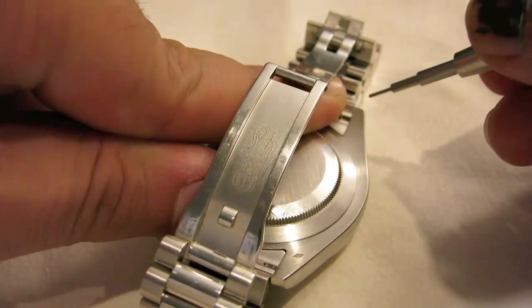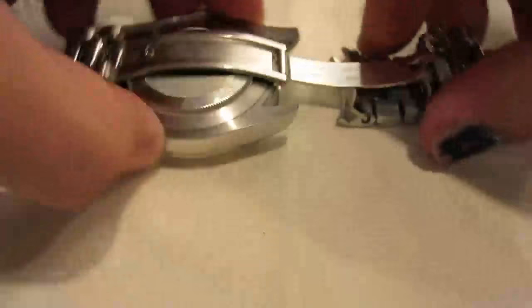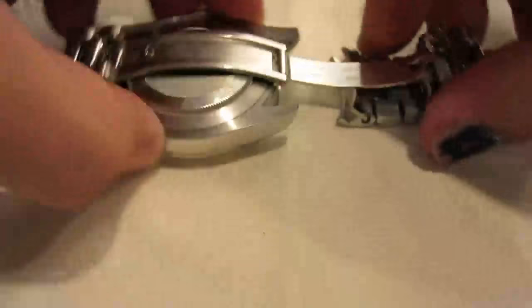Do the same to the other side. The band will pop right off. The serial number will be located between the lugs on the case. We won't show you the serial number of this watch for security purposes.